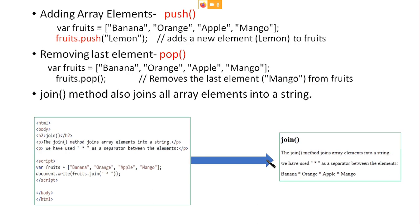Next, how to add array elements. There is a method called push, similar to the push and pop operations you already studied in data structures. Here, fruits is defined as banana, orange, apple, and mango. fruits.push('lemon') means lemon is added to the fruits array. You can remove the last element using the pop operation: fruits.pop().